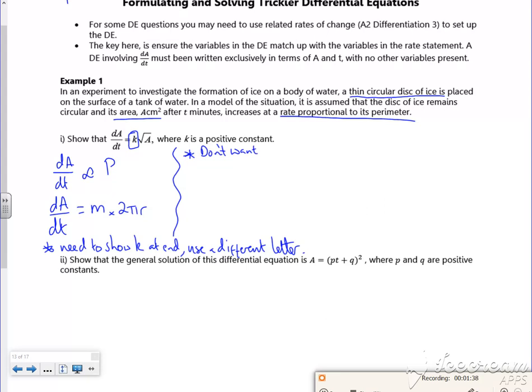So I know that A is πR squared. So I've got an equation that links A and R, but I need to get R equals. I want to replace this R with something related to A.